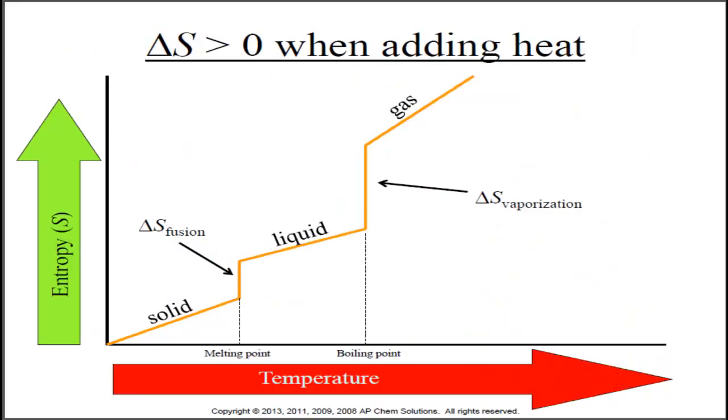Here we're going to look at the change in entropy being positive when we add heat. At zero Kelvin, the entropy is going to be zero. Everything is lined up in perfect crystals. There is no movement whatsoever. Therefore, there's no randomness.